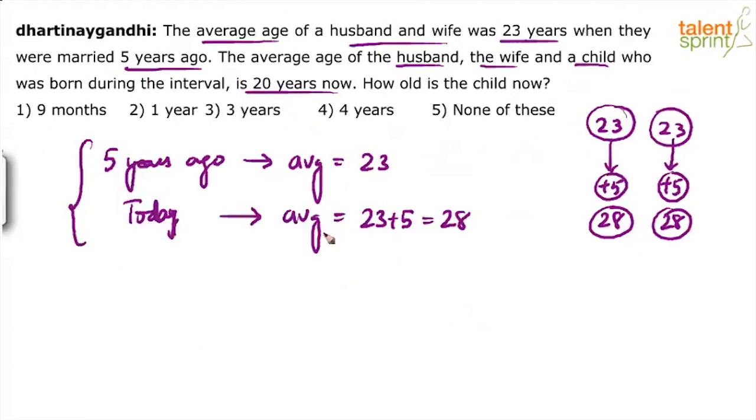See, average of husband and wife is 28. So, what is the sum of husband and wife? 28 into 2 is 56. And what is the sum of husband, wife, and child? 20 into 3 is 60. Yes? 20 years is the average of 3 persons. Total is how much? 60. So, what is the difference? 4 years. Child's age will be 4 years.